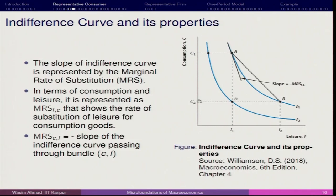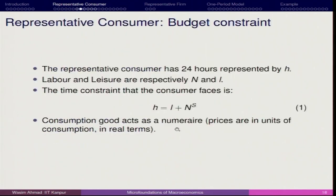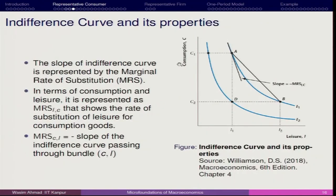At point B you have less consumption and more leisure; at point A you have more consumption and less leisure. The MRS is simply the ratio of marginal utilities of the two goods L and C. We are not considering special cases like whether consumption and leisure are complementary or substitute goods. This concludes the utility part — we assume the representative consumer follows this framework when choosing between consumption and leisure.